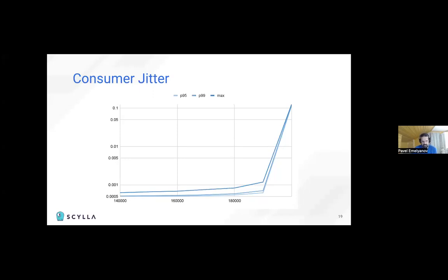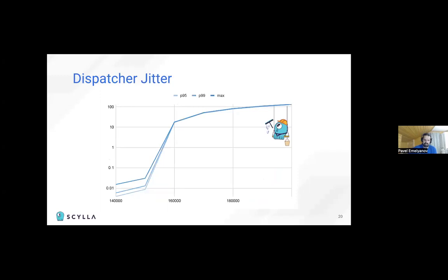Now, if adding jitter to the consumer, a similar thing happens. Messages get processed at different times. When the generation rate is close to the consumption rate, the time to process goes approximately 200 times larger. That's really sad, but again, it's not the worst thing that could happen. The worst thing happens when the jitter is added to the dispatcher.